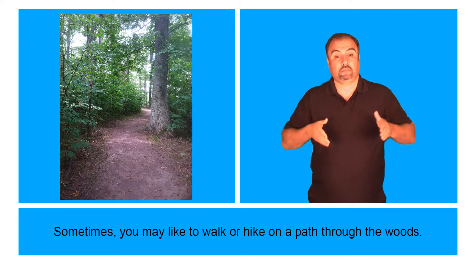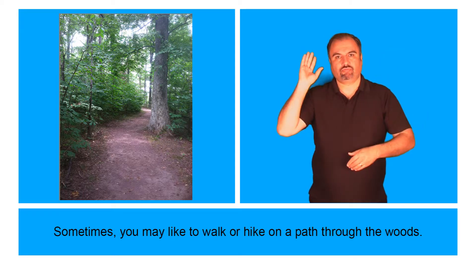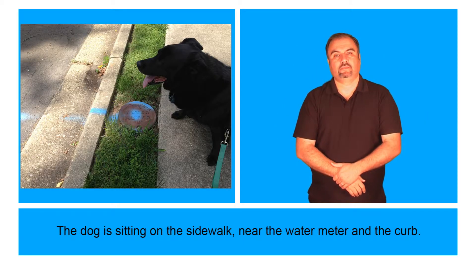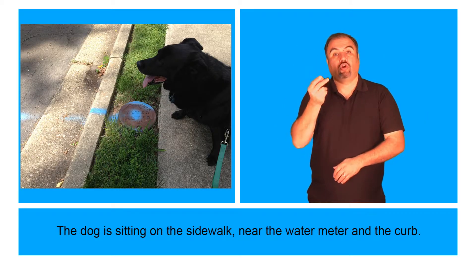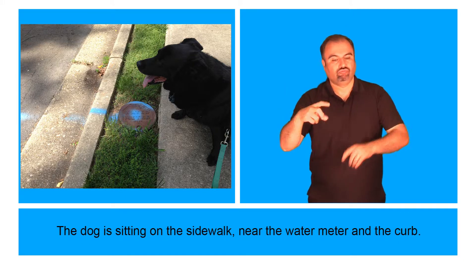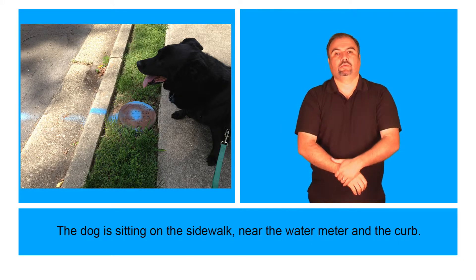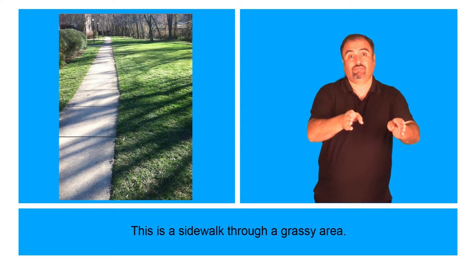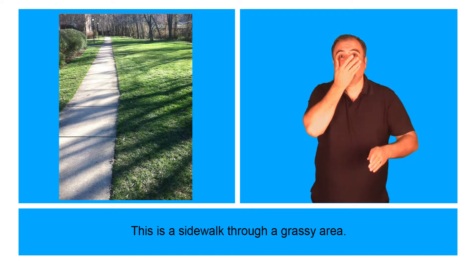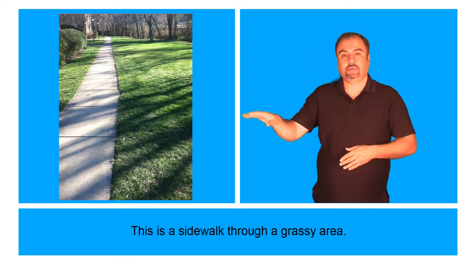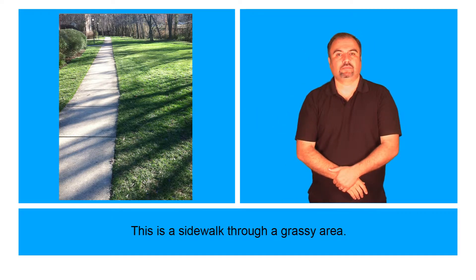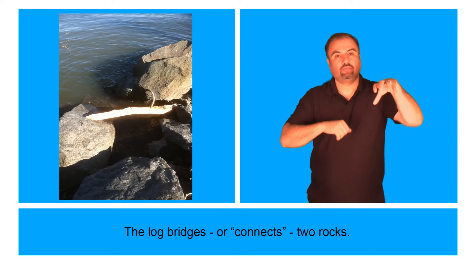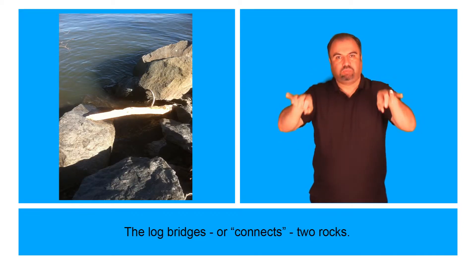Sometimes you may like to walk or hike on a path through the woods. The dog is sitting on the sidewalk near the water meter and the curb. This is a sidewalk through a grassy area. The log bridges or connects to rocks.